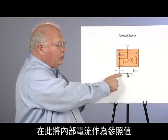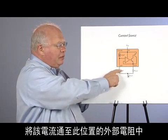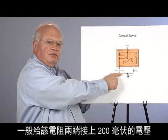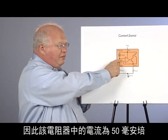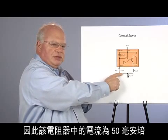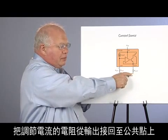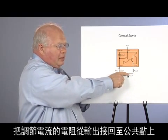We take our internal current reference, and we feed it through an external resistor here. Typically, we put about 200 millivolts across this resistor. So, we have our 50 microamps flowing through a resistor to set up an external reference.